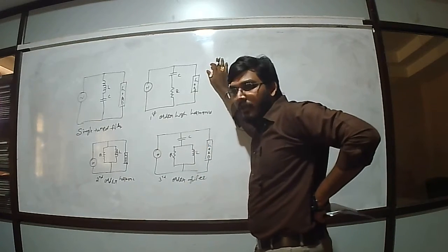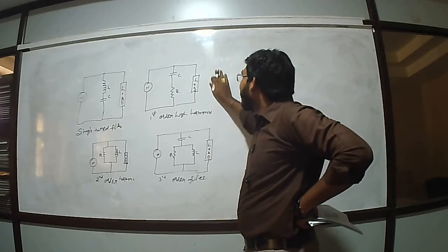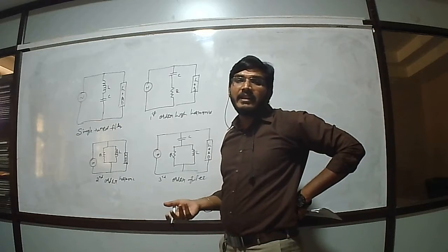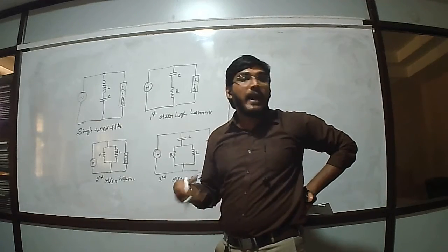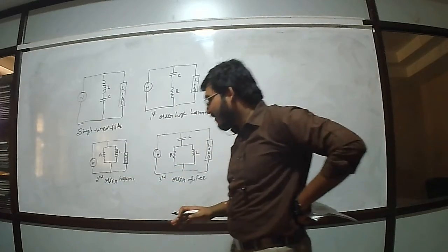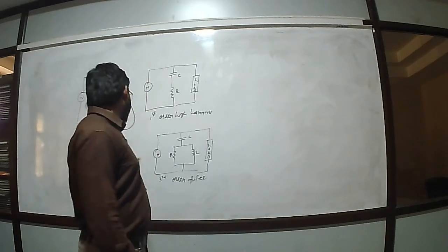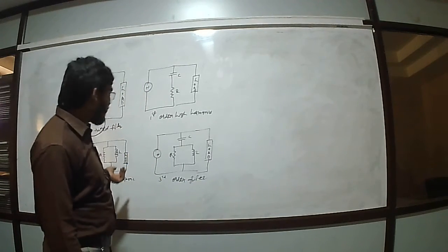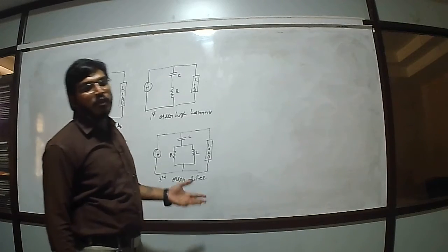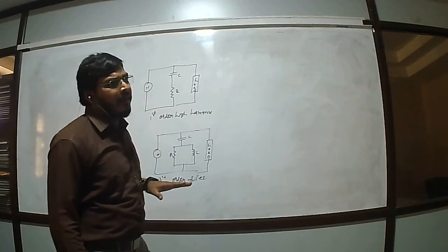Coming to the higher order filters — that is first order, second order, and third order — slowly the capacity of the elements will be increasing, and they should be connected in parallel to each other. Namely, resistor and inductor. Whenever the resistor and the inductor are connected to each other in shunt and assigned to the supply, that is called a second order filter. And if we add a series capacitor also, that is called a third order filter.